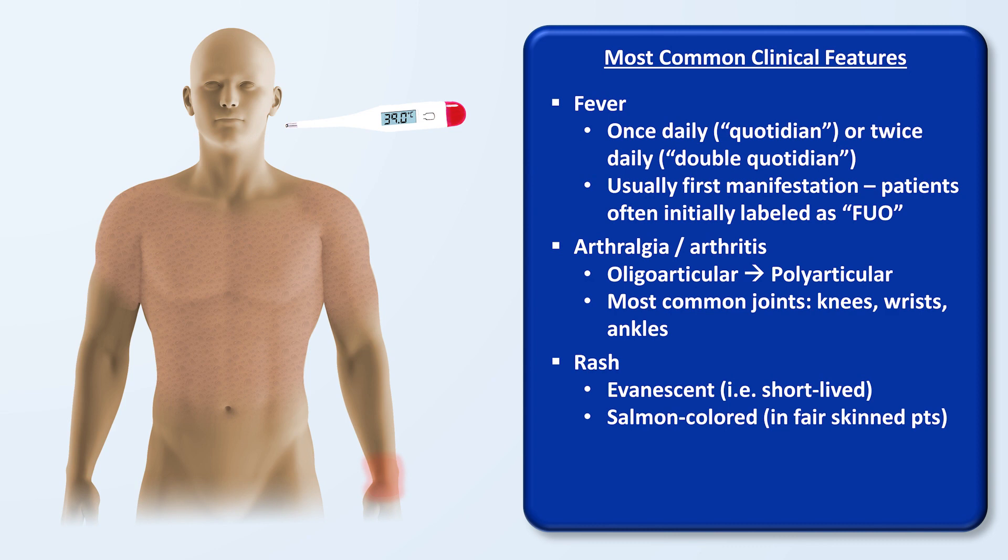In darker-skinned individuals, the rash can range from difficult to see to dark brown. It is either macular or maculopapular, predominantly on the trunk and extremities, and is non-pruritic.